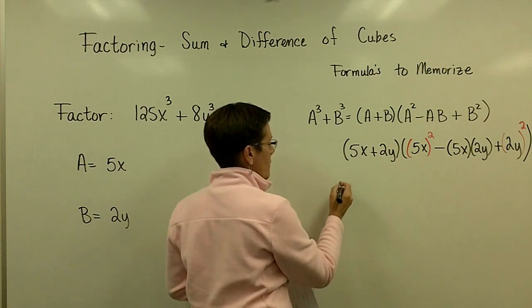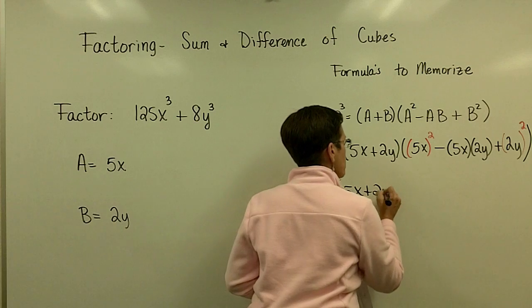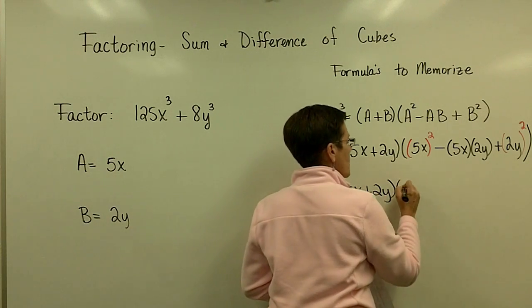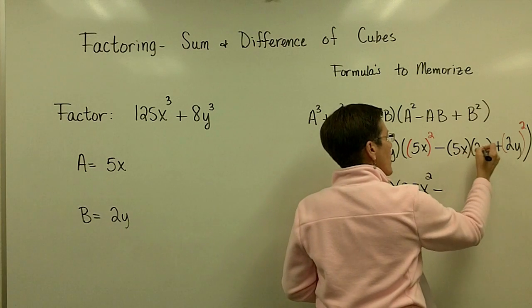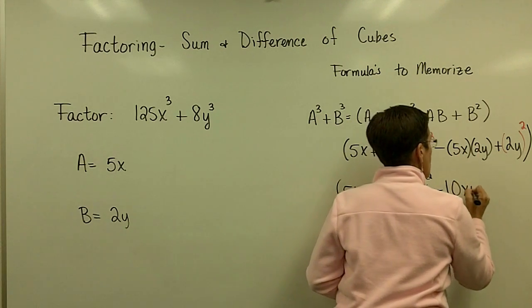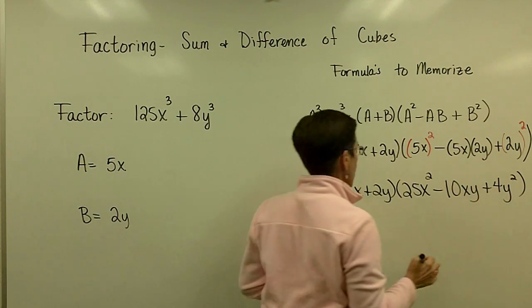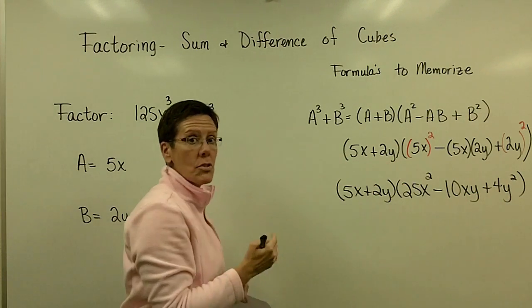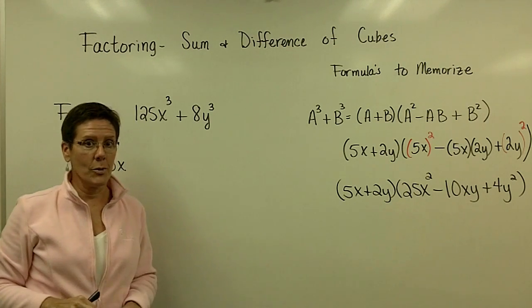So finally, my answer to this problem is this 5x plus the 2y, but then 5x times 5x is 25x squared, 5x times 2y is 10xy, and 2y times 2y is 4y squared. And I have the binomial times the trinomial that is the factored form of this sum of cubes.